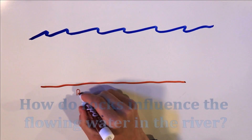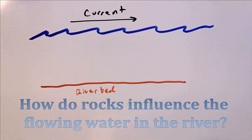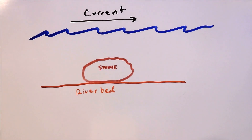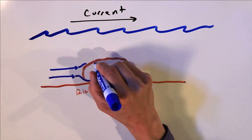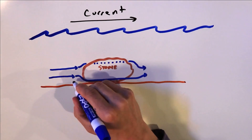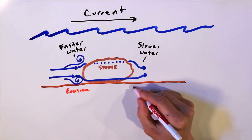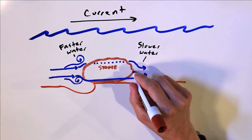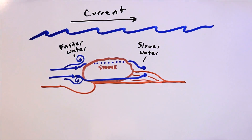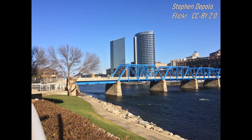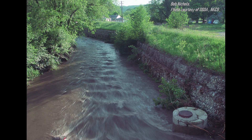Lastly, how do rocks influence flowing water in a river? When a rock sits on the riverbed, the current flows against it and bends around it. This obstruction creates swirly areas of turbulence called eddies, which often erode the sediment in front of the rock. By the time the water passes the rock, it has slowed down, so any sediment it's carrying is deposited behind the rock. A mass of rocks will slow down great quantities of water — which is why people build big piles of rock on the outside bends of rivers: those piles slow the water and prevent the outside bend from eroding.